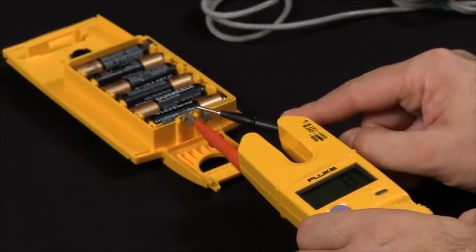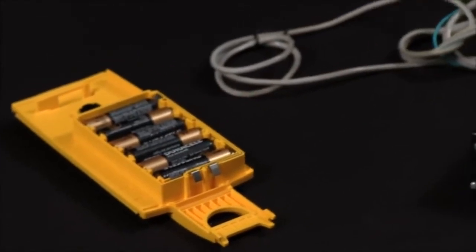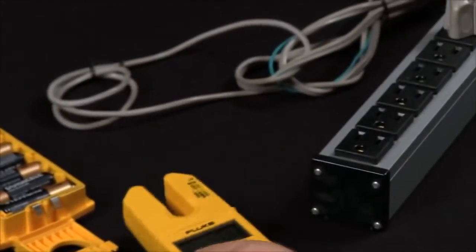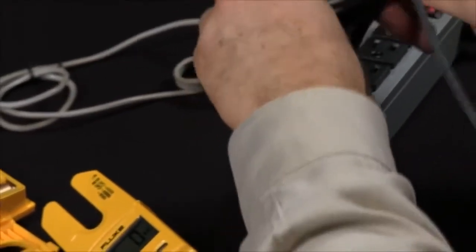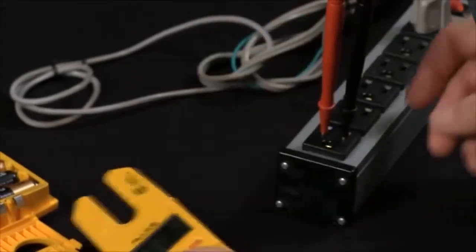To take an AC measurement, all I do is take my probe tips and I can place them directly into the socket, and now I am measuring 118 volts AC.